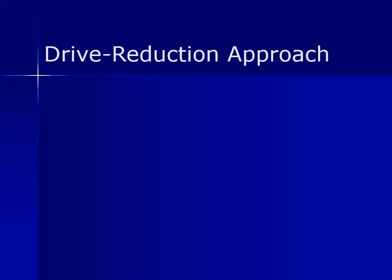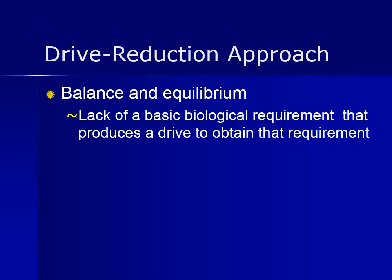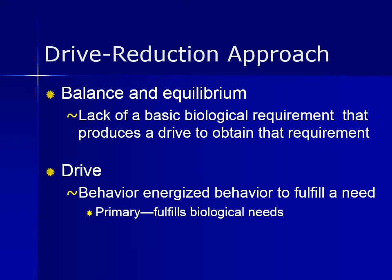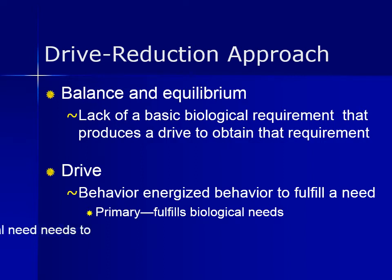The next is the drive reduction approach, where the body actively works to maintain a certain state of balance or equilibrium. When there is a lack of a basic biological requirement, it produces a drive to obtain that requirement. Motivation arises as a result of these biological needs, where the term 'drive' refers to the state of tension or arousal caused by biological or physiological needs — these are called primary drives. Some examples include hunger, thirst, and being warm. This drive usually creates an unpleasant state, a tension that needs to be reduced. People seek out ways to fulfill these biological needs: we get a drink when we're thirsty, we eat when we're hungry, we turn up the heat or put on a coat when we're cold.